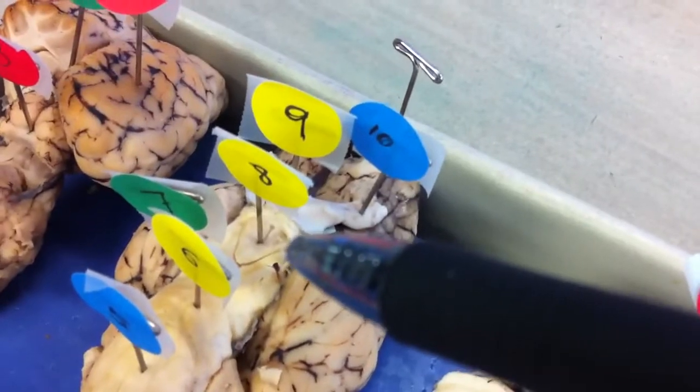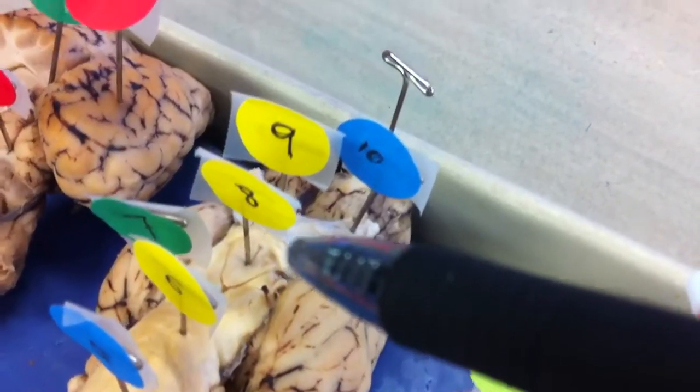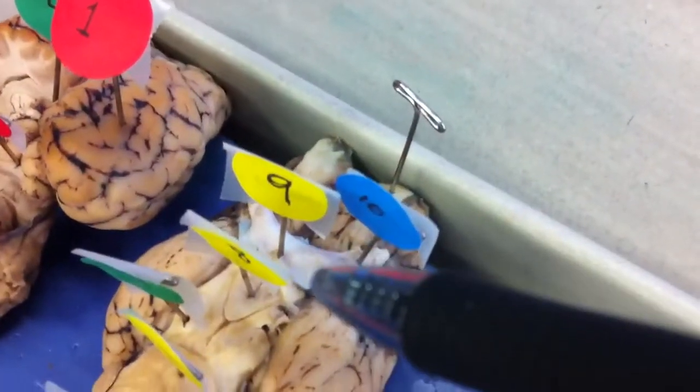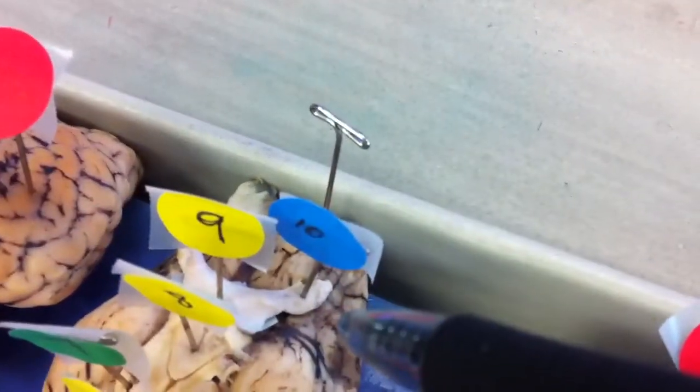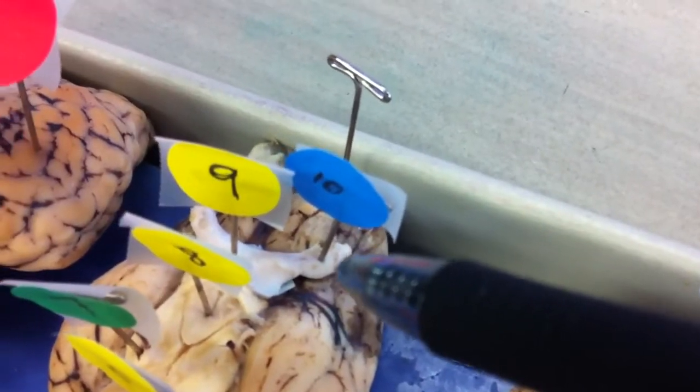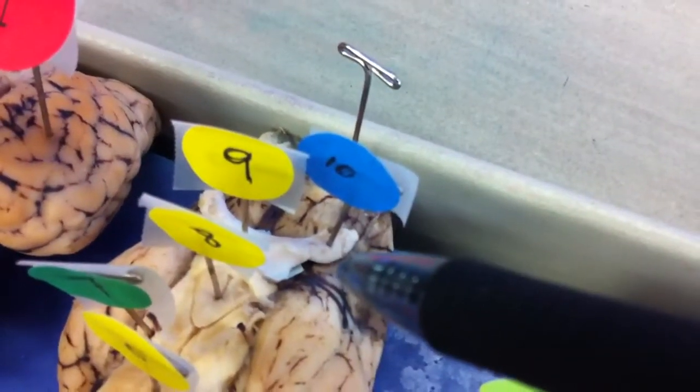Eight will be the mammillary body. Nine will be the optic chiasma. And then you can see ten is the optic nerve, which is the second cranial nerve.